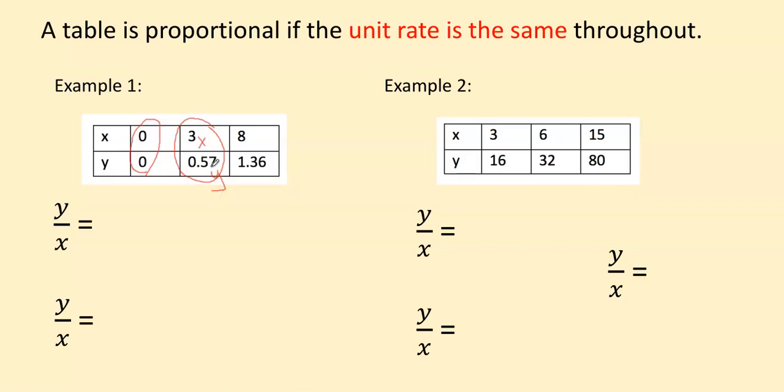So I need to make sure that y is in the numerator and x is in the denominator. And today I'm going to let you use your calculator. I know it's a miracle. Okay, so 0.57 divided by 3, we get 0.19 or 19 hundredths.